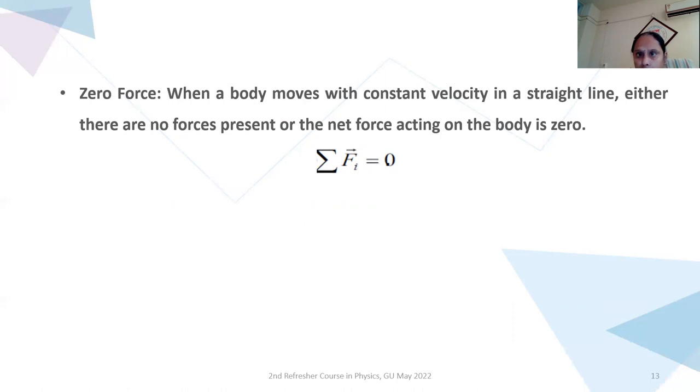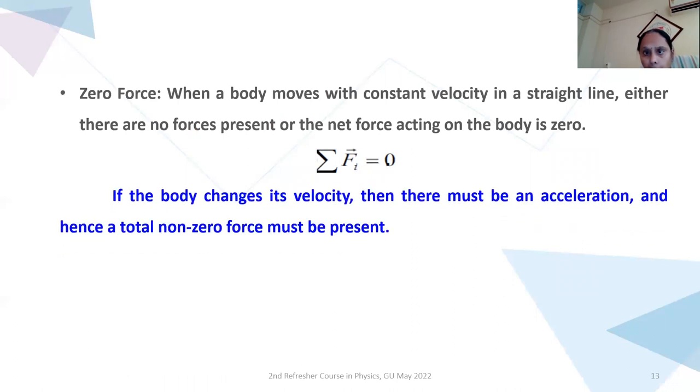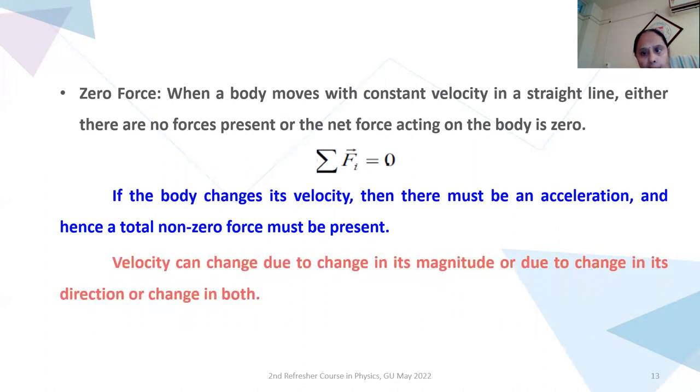Now I need to know what is zero force. When a body moves with a constant velocity in a straight line, either there are no forces present or the net force acting on the body is zero. That means sum of all the forces is equal to zero. If the body changes its velocity, then there must be an acceleration. Because when we say body changes its velocity, that means we are talking about the rate of change of velocity. So it should have acceleration and hence a total non-zero force must be present.